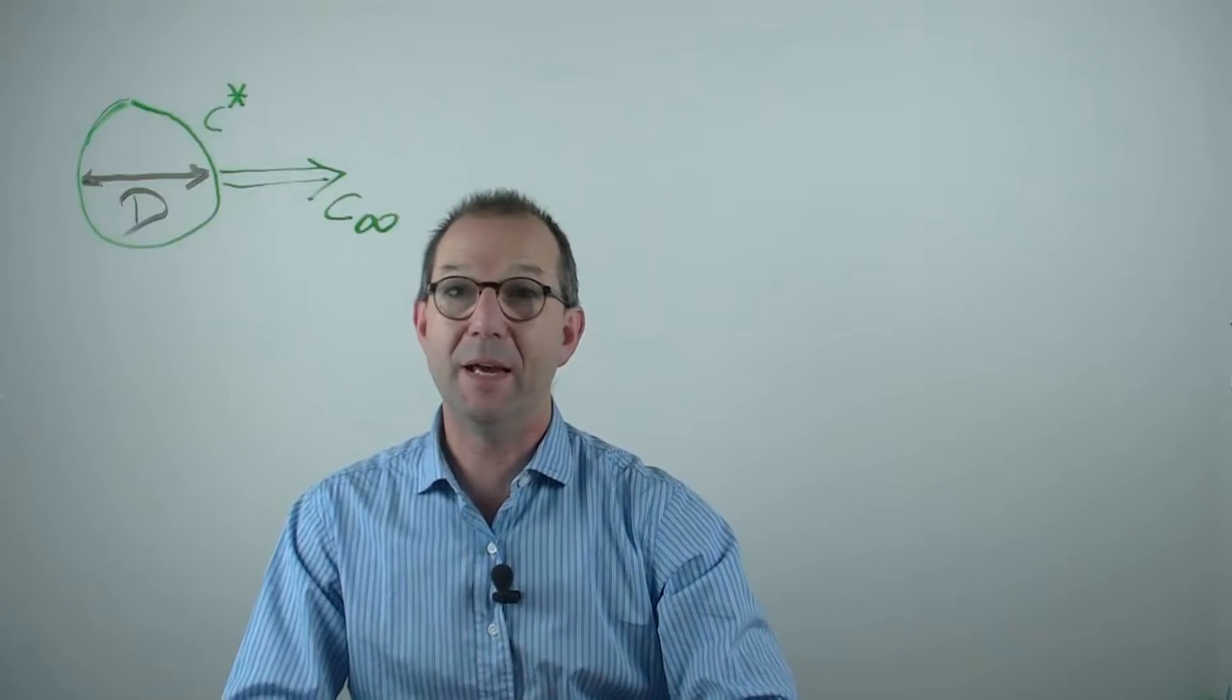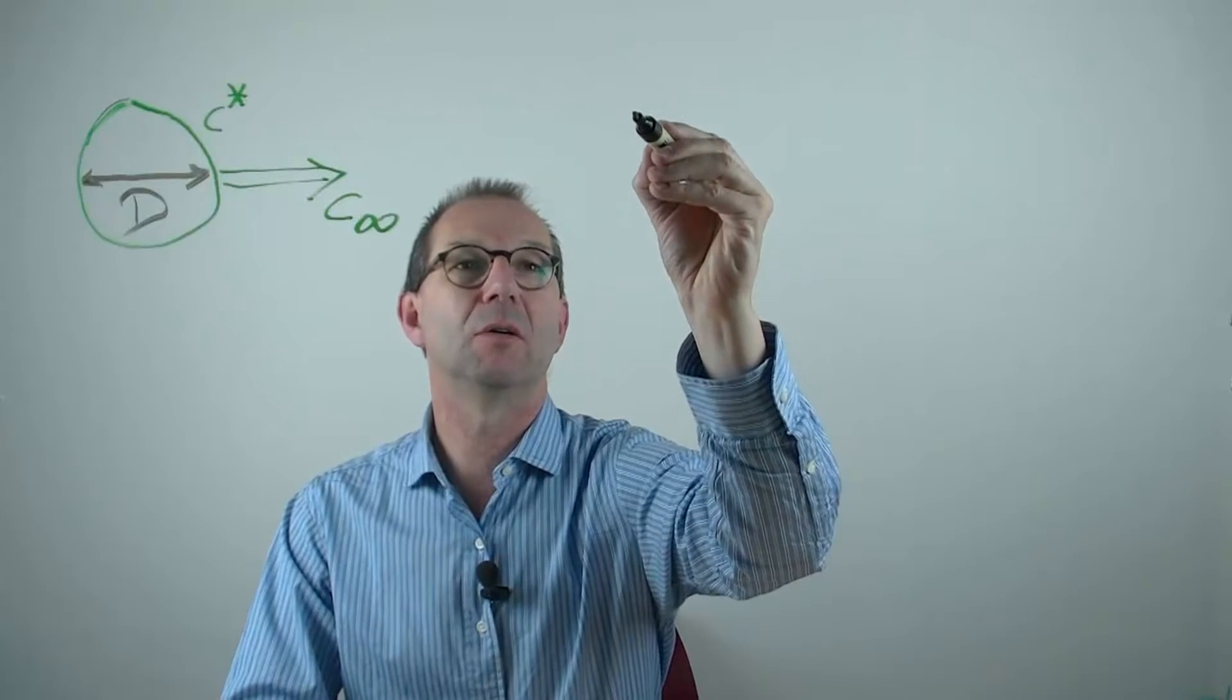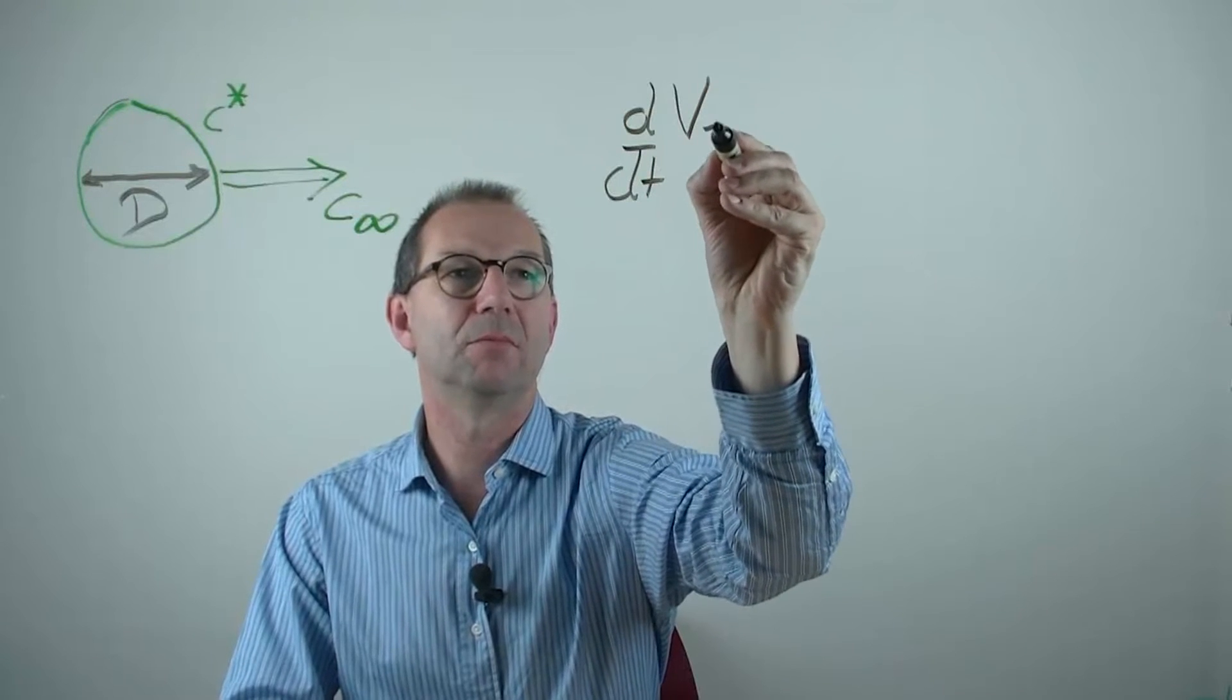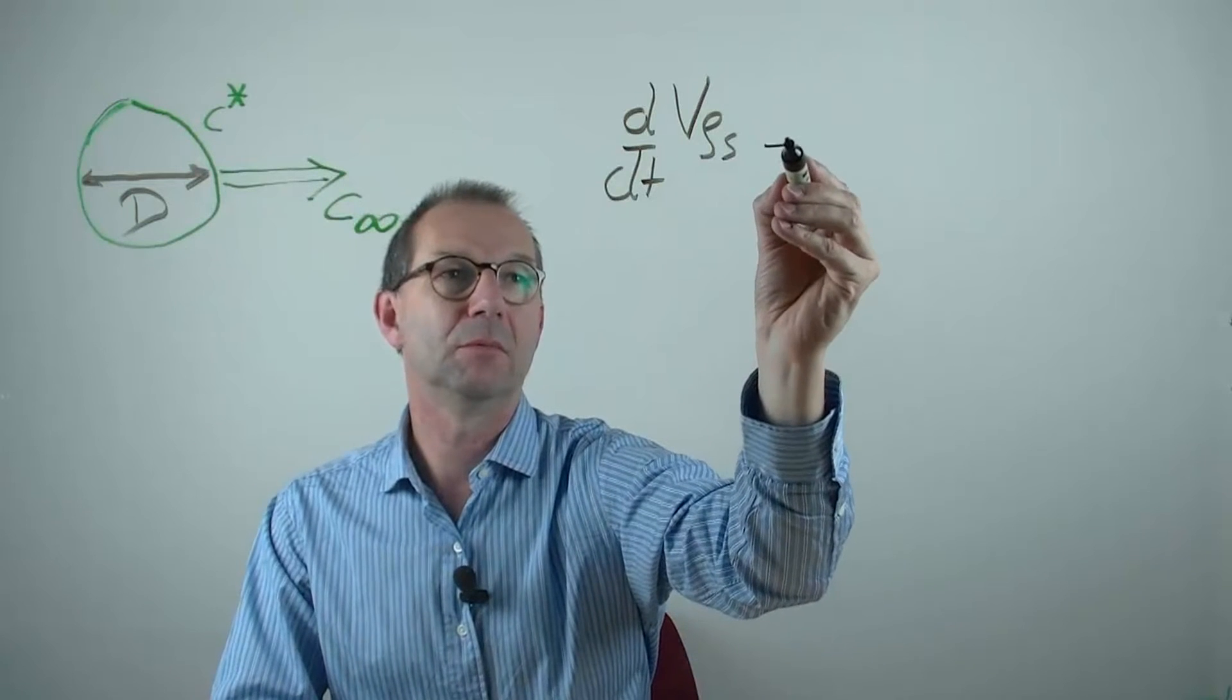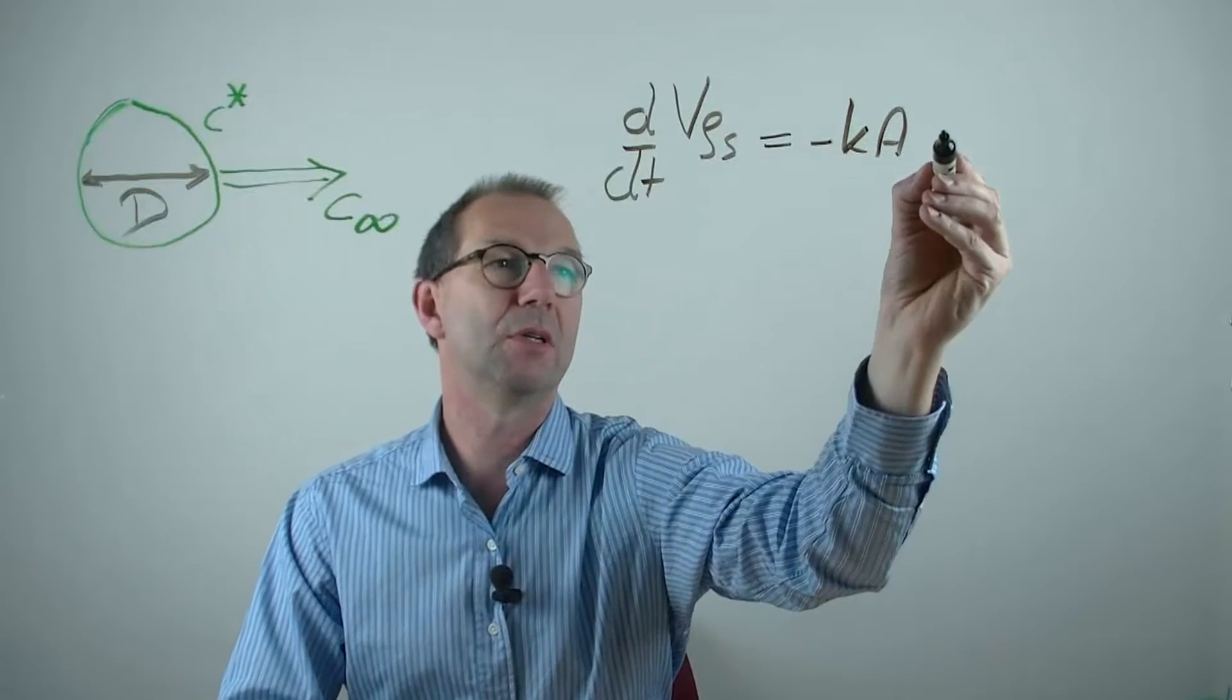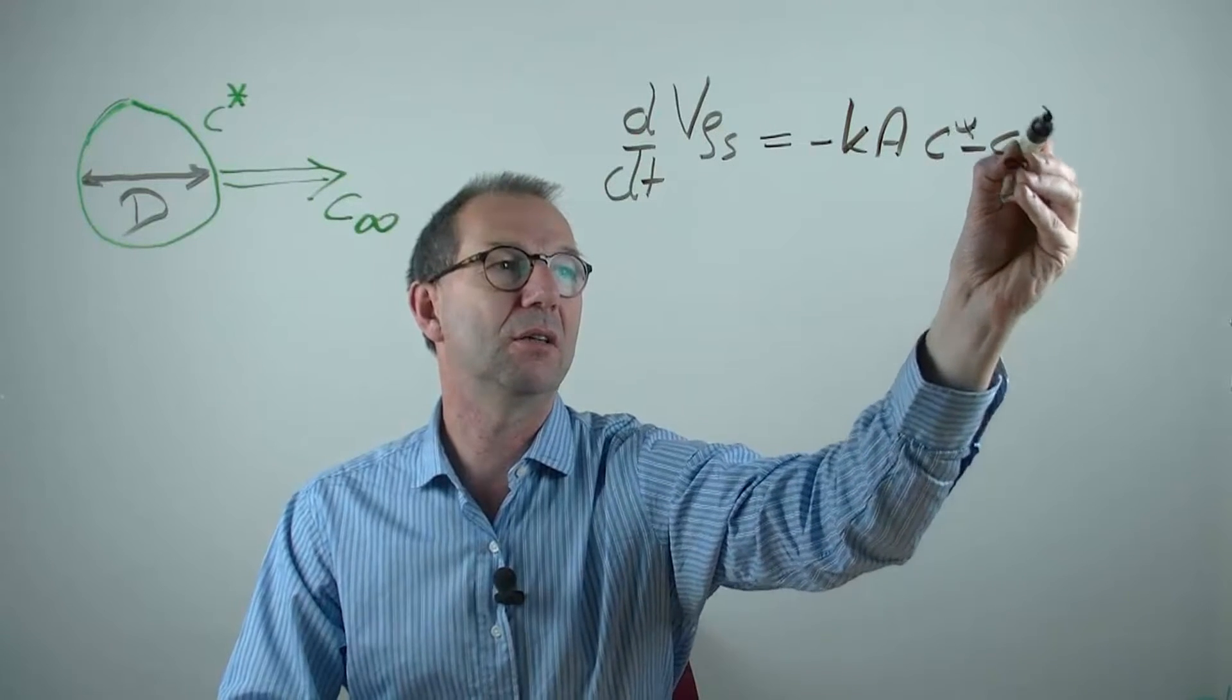So, what we had was the differential equation, the mass balance which reads as the change of the mass of the sphere equals minus k times the area times the driving force C star minus C infinity.